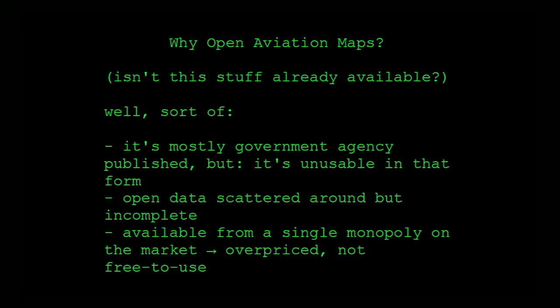But this is what we do. So why do we need this Open Aviation Map project — isn't this stuff already available? People have been flying for over 100 years. It's out there, but not in an open manner. Government agencies publish this kind of data, but the way it's published it's unusable — it's basically this textual description that I read earlier. There are commercial companies who supply this information to commercial airliners, but there's essentially a single monopoly who does that, and accordingly it's quite pricey.